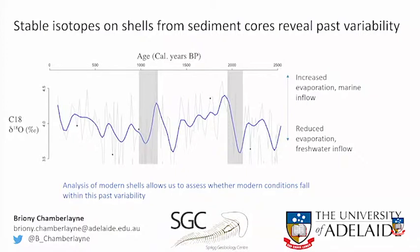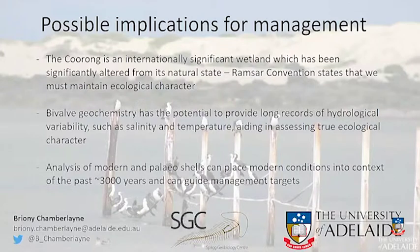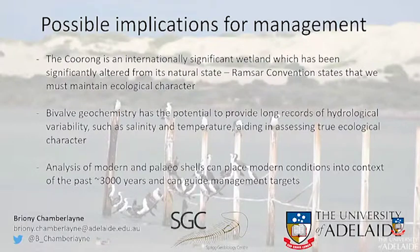When we analyse the modern shells we've been collecting, we'll be able to assess whether they fall within the range of variability shown throughout this 2,500-year record from the core. We have to maintain the ecological character of the Coorong, but it's hard to determine what that is without these kinds of records. Bivalve geochemistry can provide quantitative records of hydrological variability, which might help guide management targets and policy. Thank you.